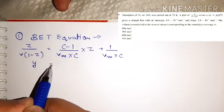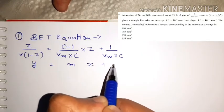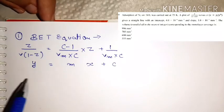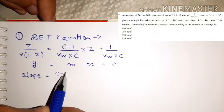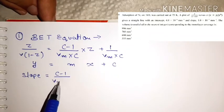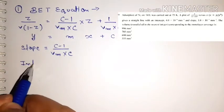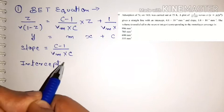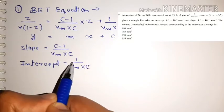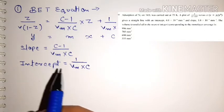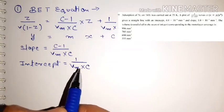If we compare this to the straight line equation y = mx + c, the slope becomes (c−1)/(Vm·c), and the intercept becomes 1/(Vm·c). Here Vm is the volume corresponding to monolayer coverage, which we need to find.